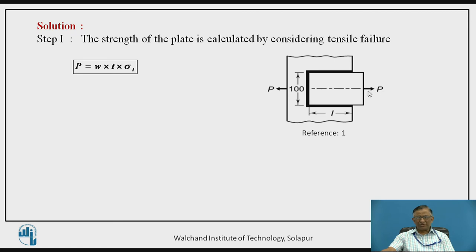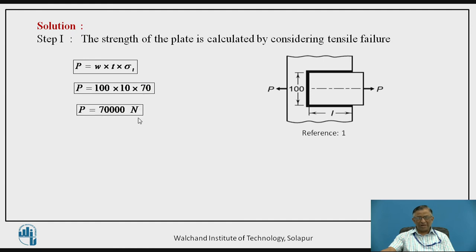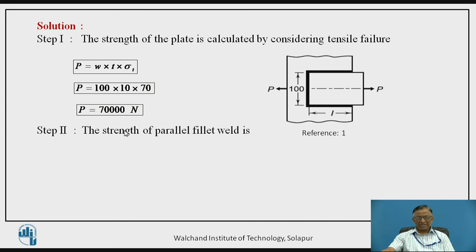The plate is subjected to tensile failure, so load P = cross-sectional area × allowable tensile stress = width × thickness × stress = 100 × 10 × 70 = 70,000 N. The strength of the plate is 70,000 N, and therefore the total strength of the weld is also required to be 70,000 N. This total strength is sustained by both the parallel fillets and the transverse fillet.